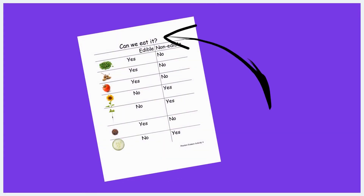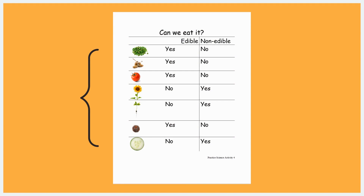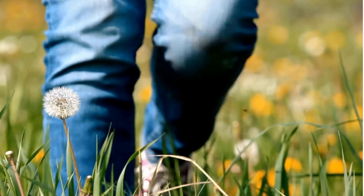Before starting the activity, you will need to write the learning activity question, "Can We Eat It?", at the top of the documentation panel. Create a chart with 7 rows and 3 columns. On the left side of each row, attach the image of your edible and non-edible seeds.